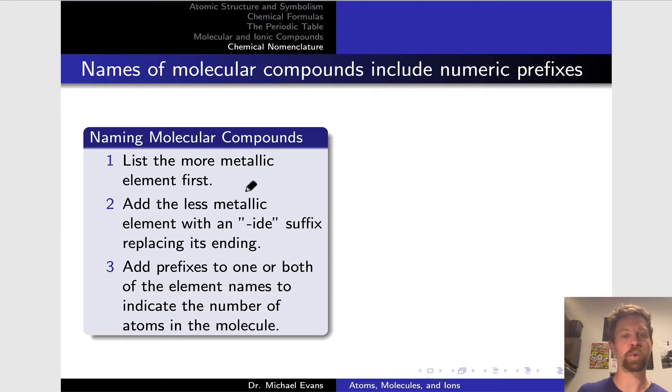The first stage is to list the more metallic element first. We would do the same when naming an ionic compound. Then we add the less metallic element using an 'ide' suffix. Again, kind of similar to how we would name an ionic compound, but the key step here that's really different is in step three. We've got to add prefixes to potentially one or both of the element names to indicate the number of atoms of each type in the molecule. This is generally done when that number of atoms deviates from one. So an example of this, for instance, would be N₂O₄.